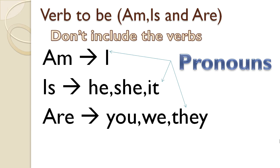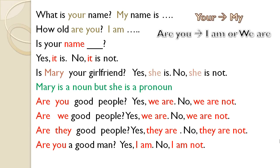Let's see how we would use these 'to be' verbs in questions and answers. 'What is your name?' — the verb to be is 'is.' My name is John. 'How old are you?' — 'are' in the question becomes 'I am' in the answer. I am 21 years old. 'Is your name Zach?' Yes, it is. No, it is not. You could also say: Yes, my name is Zach. No, my name is not Zach. Or: No, my name is John.